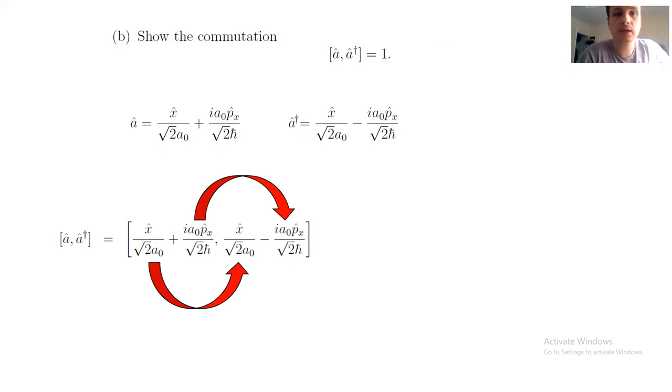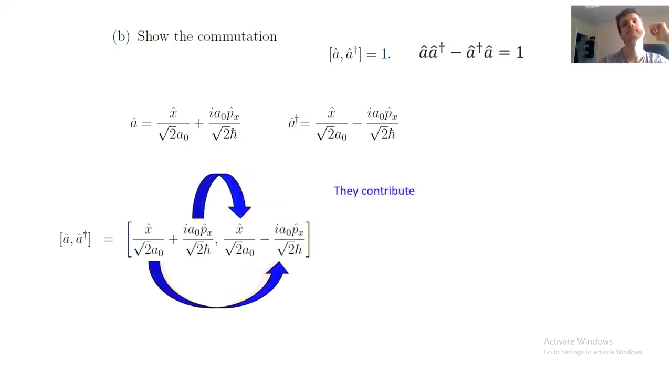Commutators that involve same quantities in both entries are going to be zero, because x, x minus x, x is zero, or px, px minus px, px is zero. So the only terms that actually contribute to the final expression are the cross-product terms. We can obtain an expression that simply depends on the commutator between x and px.